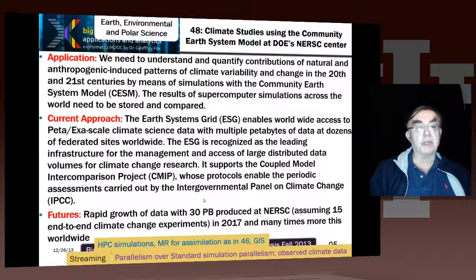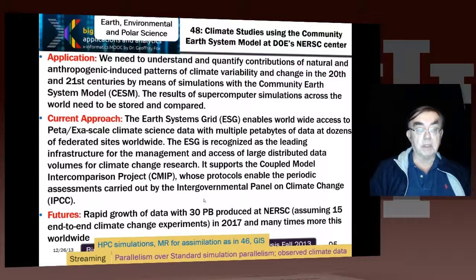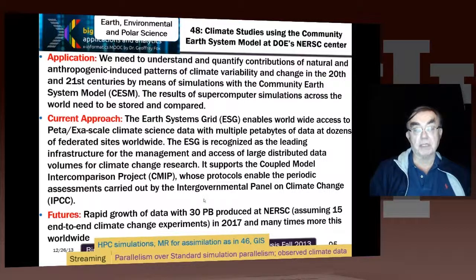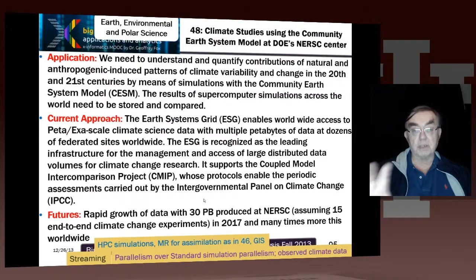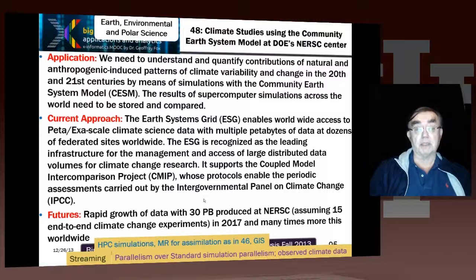Here's another data assimilation example at the high end: by 2017, simulations from the Earth Systems Grid — which coordinates all climate science work — are going to produce 30 petabytes just at Lawrence Berkeley Lab. As this goes on around the world, given that weather and climate are critical areas of scientific study, the total amount of data from climate simulations must be in the hundreds of petabytes per year. The key is to store data in a way that can be easily accessed and understood for later scientific discovery.